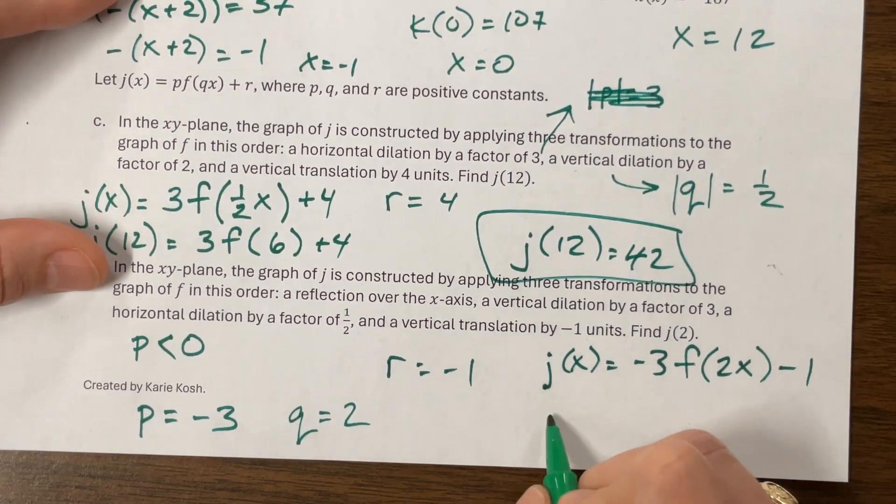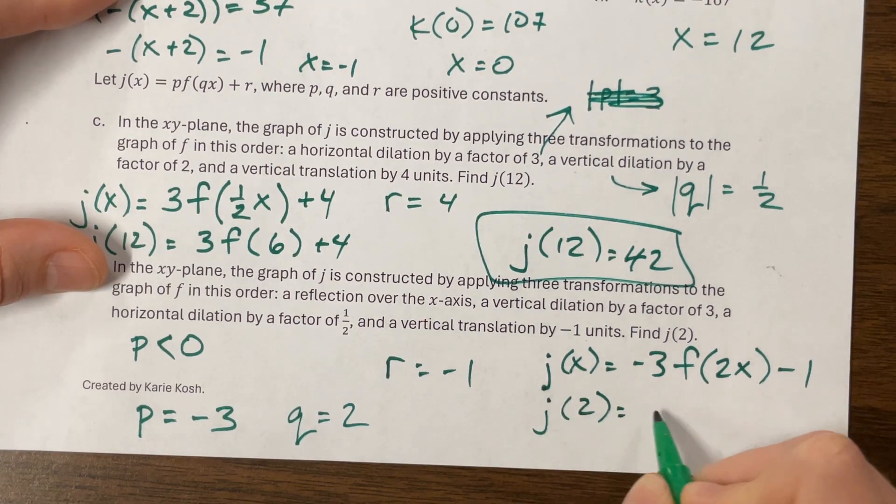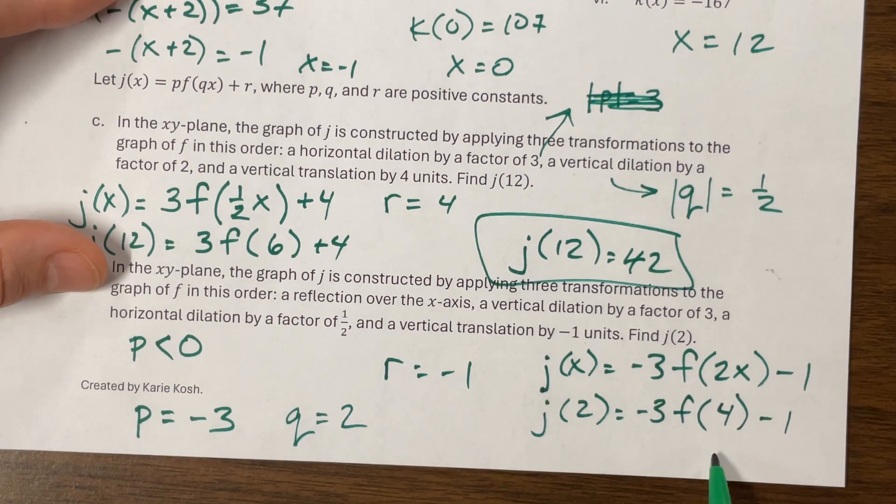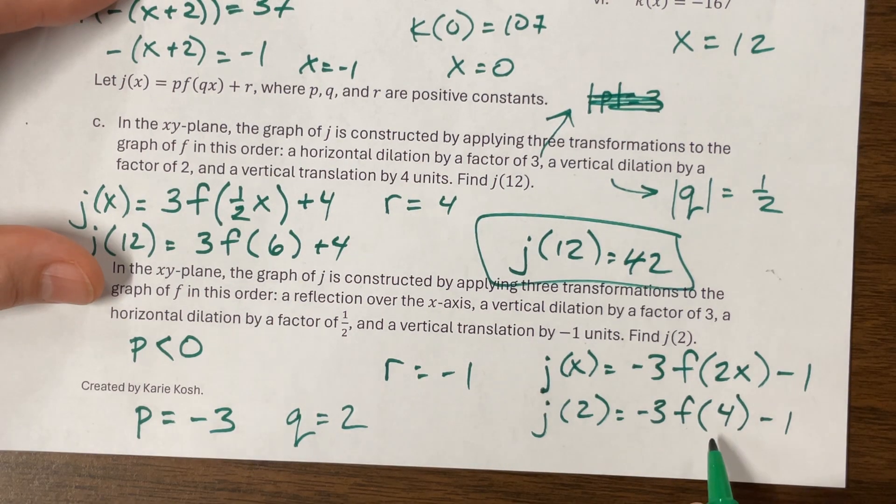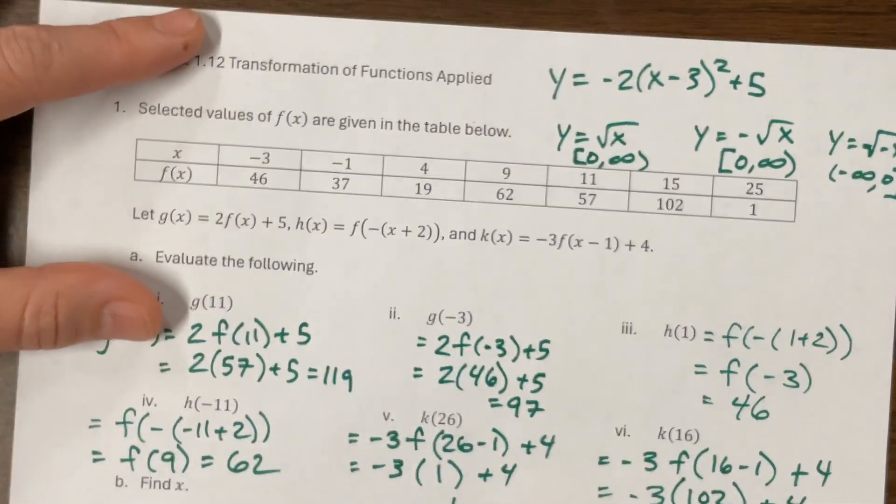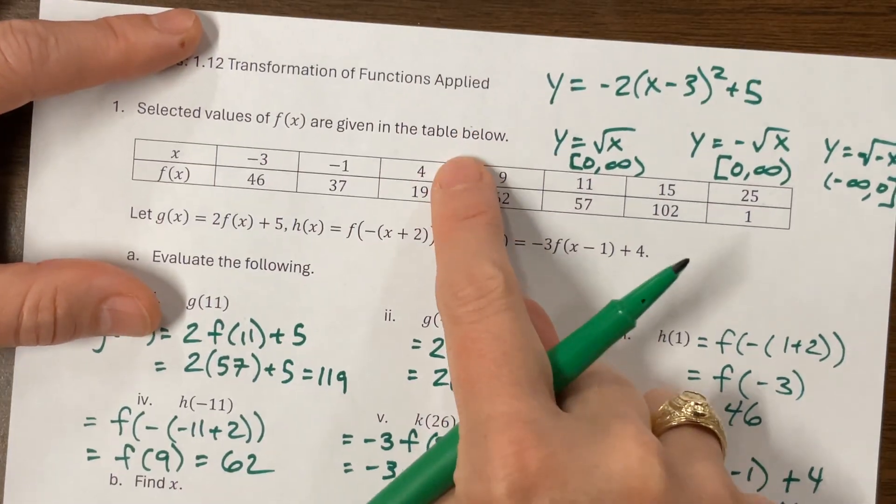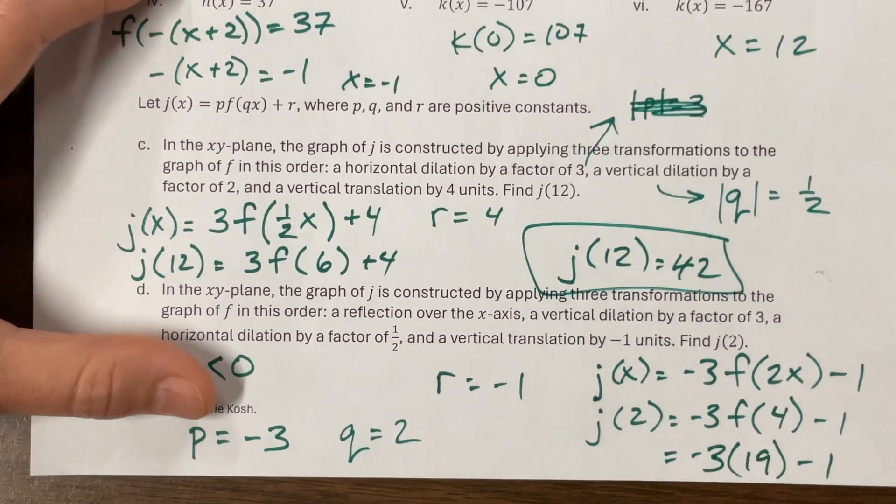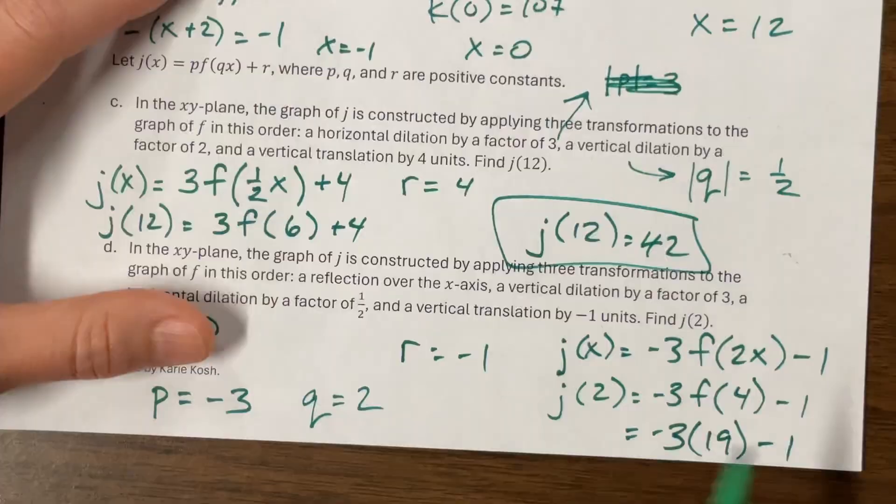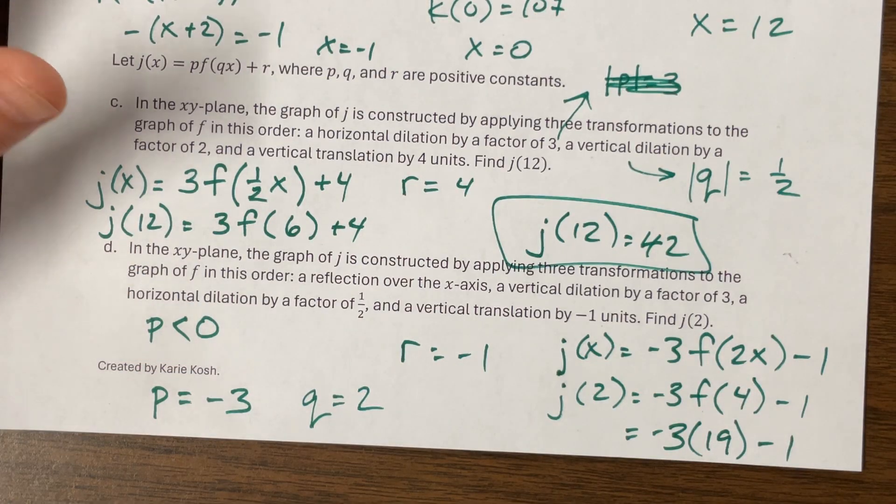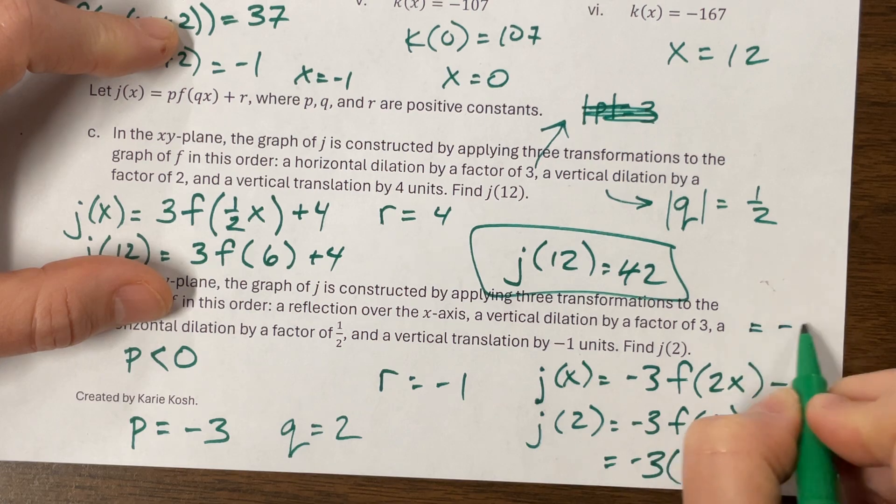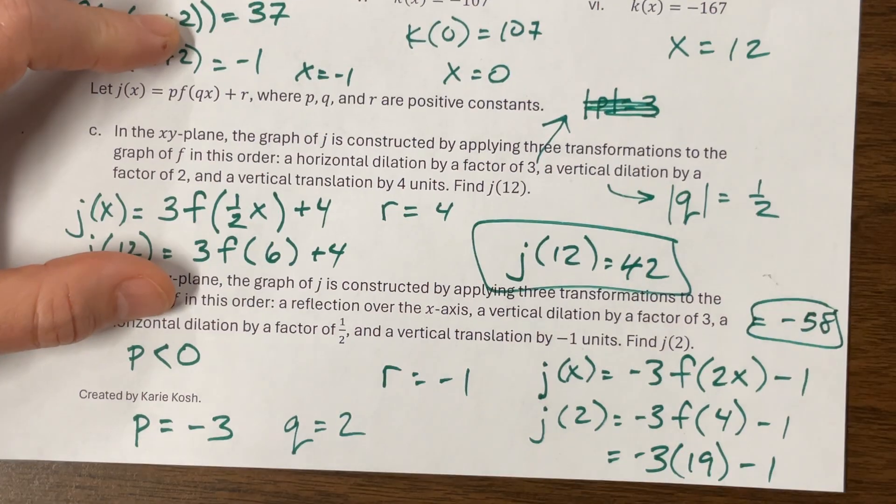We have J of X is equal to a negative three F of two X minus one. And so they want to know J of two, two times two is four. Oh, I think that's the same value we used a second ago. This was 19. I don't know that I intended to do that, but there you go. So negative three times 19 minus one, negative three times 20 would be negative 60. So that's negative 57 minus one negative 58. And there we go.